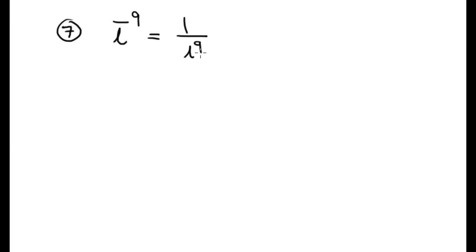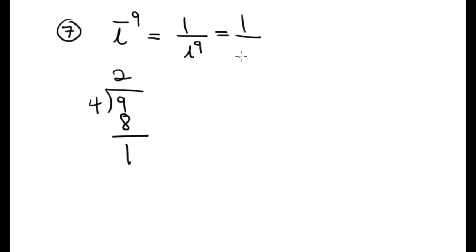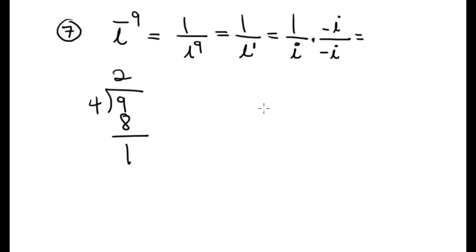Number 7: i to the negative 9. This equals 1 over i to the 9th power. 9 divided by 4 is 2 remainder 1, so this is 1 over i. To simplify, multiply by the conjugate. This gives negative i squared in the numerator, and since i squared is negative 1, the numerator becomes positive 1 over 1 in the denominator. So the top is negative i and the answer is negative i.